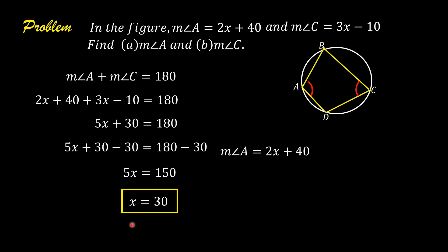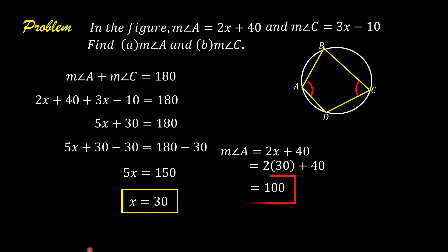The measure of angle A is equal to 2x plus 40. Substituting 30 for x, we have 2 times 30 plus 40. 2 times 30 is 60, and 60 plus 40 is 100. Therefore, the measure of angle A is equal to 100.